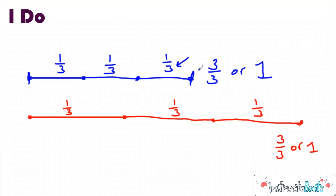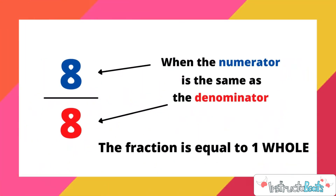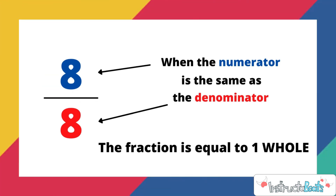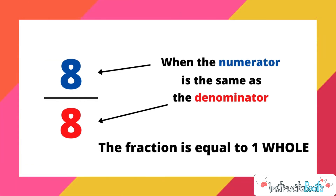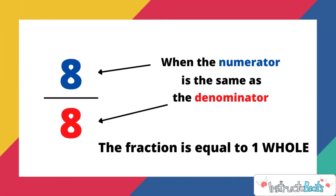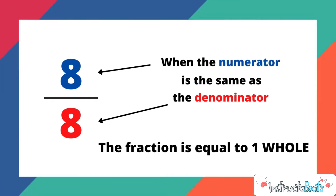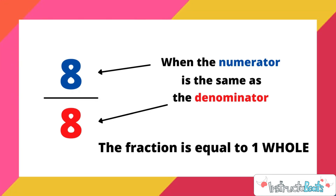We can build the whole and see how long it is even if we're only given one unit fraction, because unit fractions are equal parts. There's one other thing to notice: one whole equals three thirds for both string cheeses. This leads to a key thought — when the numerator is the same as the denominator, that fraction equals one whole. So you could have two halves, three thirds, four fourths, five fifths, six sixths, eight eighths — any time the numerator is the same as the denominator, the fraction equals one whole.